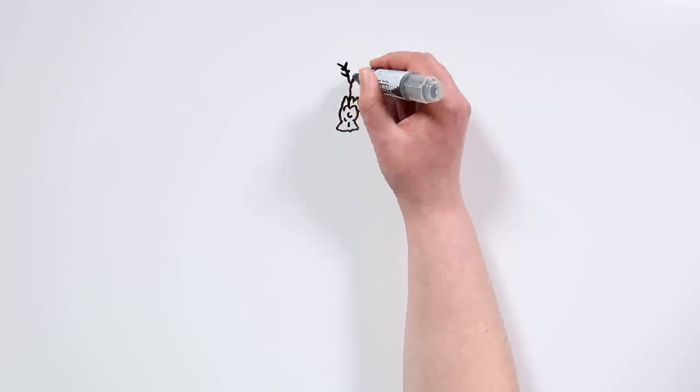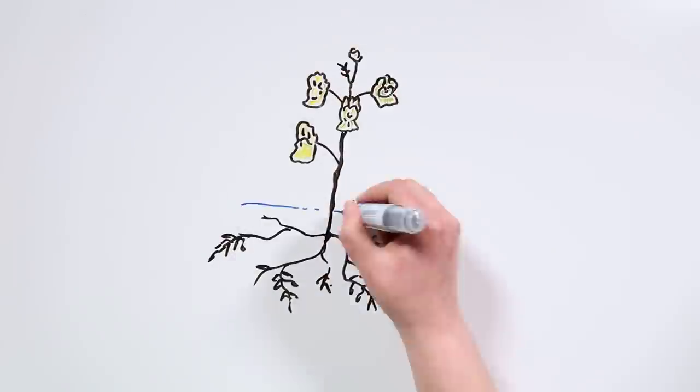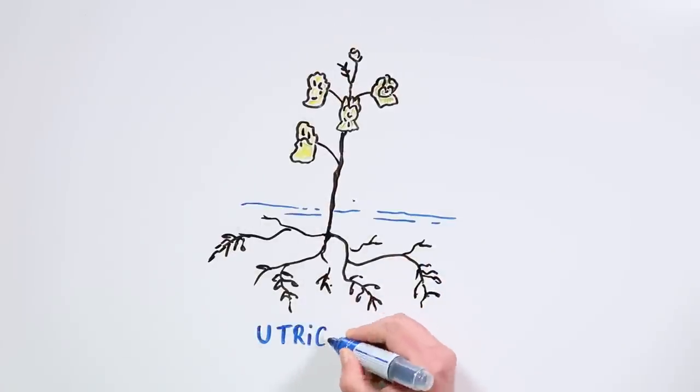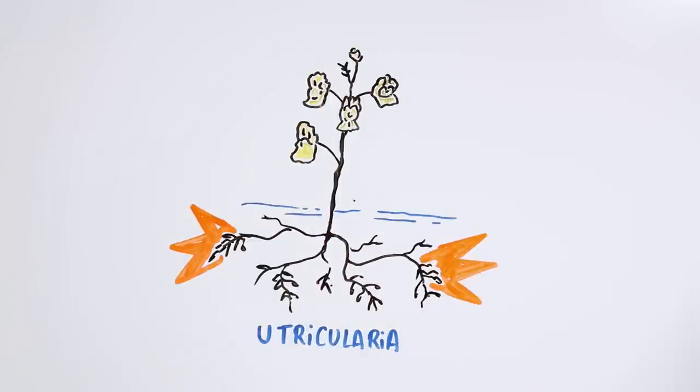Another capture system they use are mechanical traps, which are pretty common in aquatic environments. This mechanism is activated when touching it, and in just a few milliseconds the plant catches and absorbs its prey.